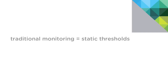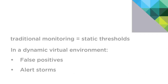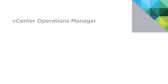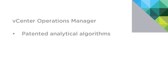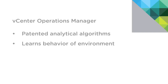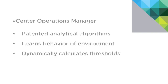Traditional monitoring tools typically use static thresholds to identify performance problems and alert you every time a metric crosses that static threshold. But in a shared and dynamic virtual environment, this creates false positives and alert storms. vCenter Operations Manager uses patented analytical algorithms to actually learn the normal behavior of your environment, and then dynamically calculates the thresholds for objects and adjusts them continuously over time. The result is fewer but more meaningful smart alerts that can help you troubleshoot issues before your end users are impacted.